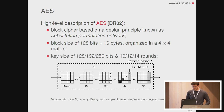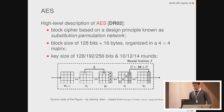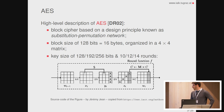AES is based on the SPN construction. It works on a text of 16 bytes organized in a four-by-four matrix. The key size can be 16, 24, or 32 bytes, and the number of rounds is 10, 12, or 14. The round is composed of three steps: an S-box layer (the non-linear operation), which works independently on each byte, and then two linear operations — ShiftRows, which works independently on each row, and MixColumn, which works independently on each column.